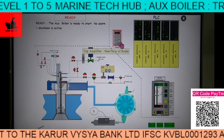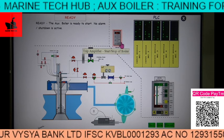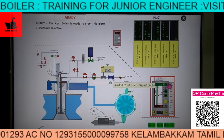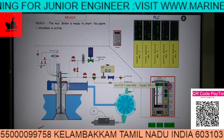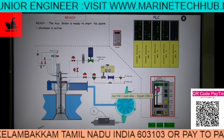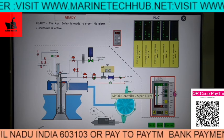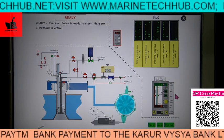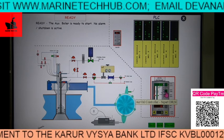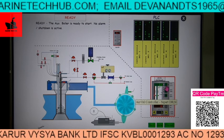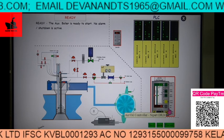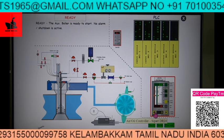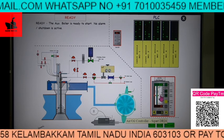We have a component here called the trip amplifier, which will trigger for the start and stop of the boiler. Then we have the air-oil controller, which is made by Siemens — this is the DR24. With this, you can keep it on auto mode or hand mode. You can increase or decrease the settings using the buttons. You can also switch between cascade and auto. This air-oil controller is very important.